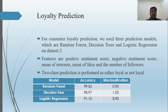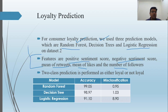Using this information, we developed machine learning models: random forest, decision tree, and logistic regression. The features used for prediction are positive score, negative score, mean number of retweets, mean number of likes, and mean number of followers — these features constitute the prediction model. The various prediction models were evaluated using 10-fold cross-validation. Random forest gives a very good accuracy of 99.05%, and decision tree gives 98.97%.